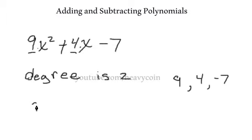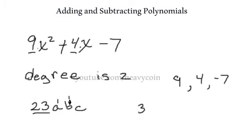Let's look at another one. Its coefficient is 23 and its degree is 3. That's because there's a power of 1 above each of the variables a, b, and c, and since they're all multiplied together you add their exponents: 1 plus 1 plus 1 equals 3. This particular one is a monomial because there's only one term.